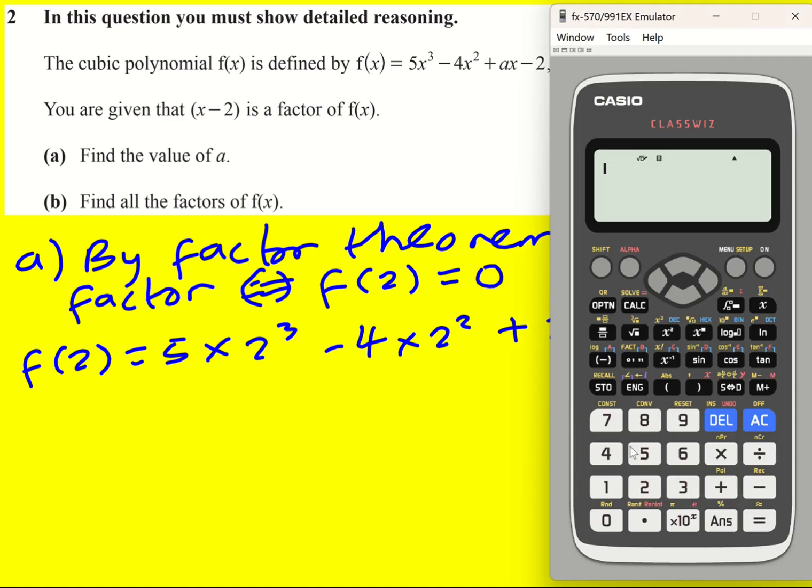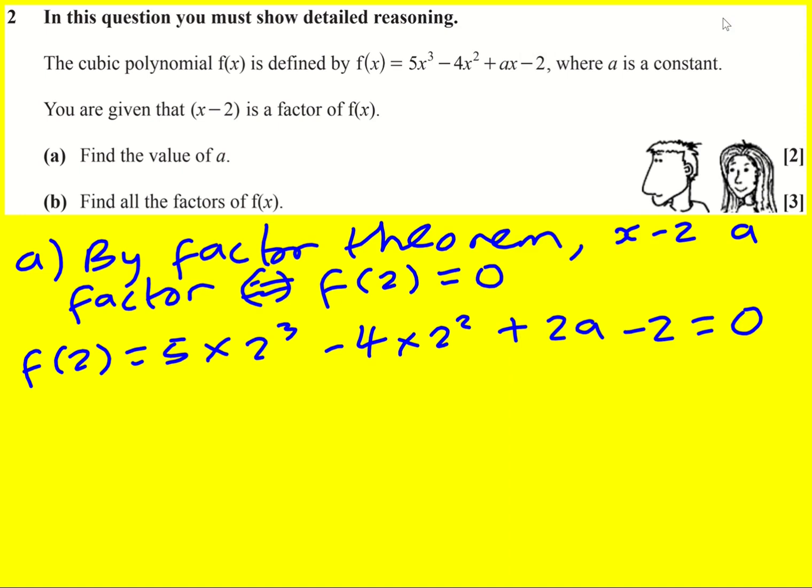For speed, let's put it in our calculator. So 5 times 2 cubed minus 4 times 2 squared - that's going to be 16 - and then we had a little minus 2 at the end. Forget about the a, we've got 22, so 22 plus 2a is equal to 0. a is going to be minus 11.